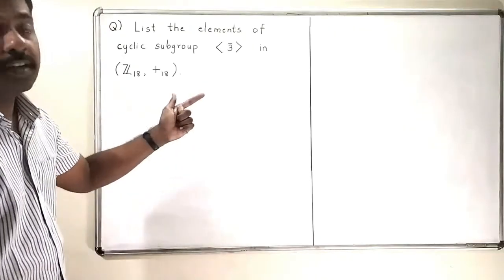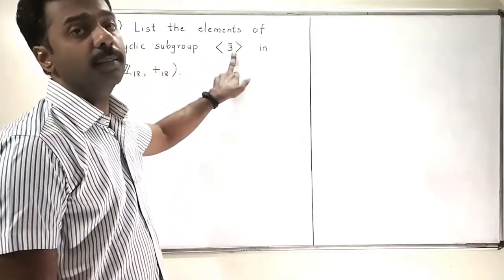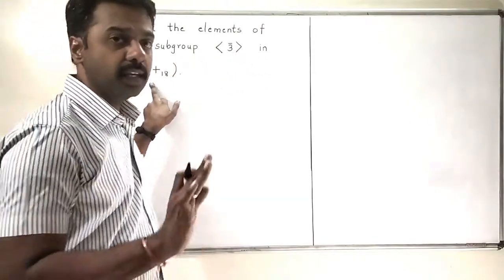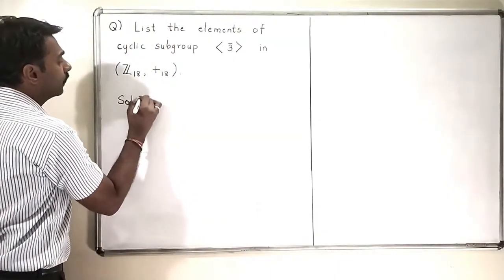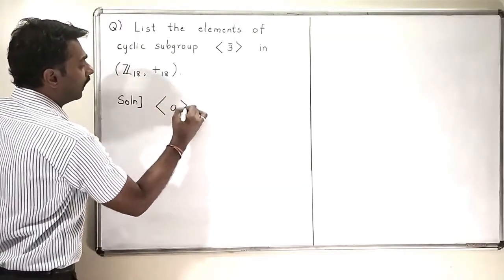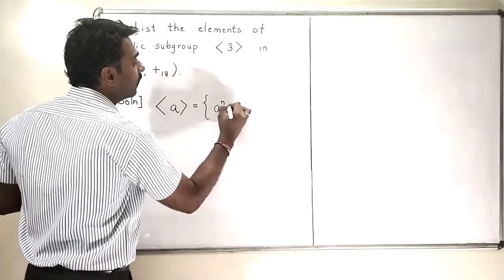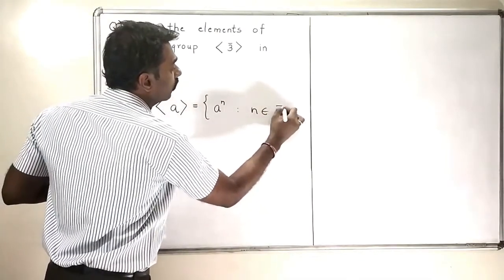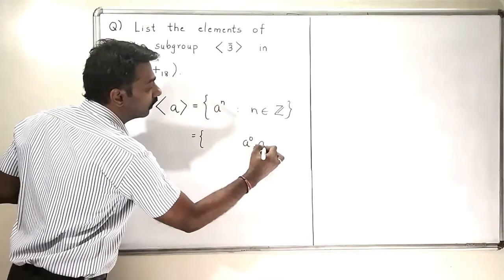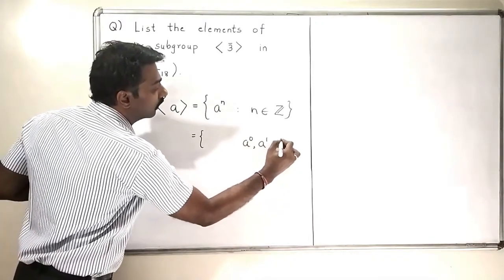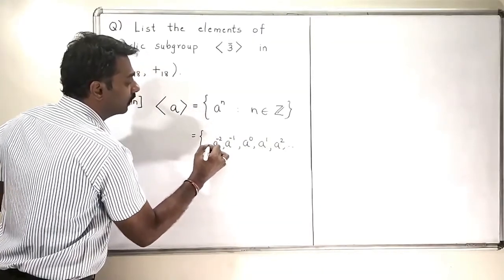In this problem, we have to list the elements of the cyclic subgroup generated by 3̄ in Z₁₈. This is a very easy problem. We know the definition of the cyclic subgroup generated by A in a group: it is A raised to N where N is an integer. So we have to collect all the positive powers, negative powers, and 0 — all these powers we have to consider in this particular set.